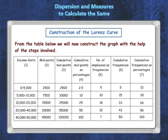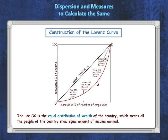From columns 4 and 7, we will now construct the graph. The scale of both the X and Y axes will be from 0 to 100, as these represent percentages. The line joining coordinates (0, 0) and (100, 100) is drawn — this is called the line of equal distribution of wealth, shown as line OC in the figure.